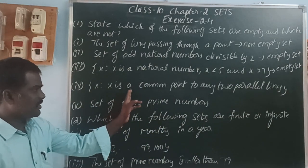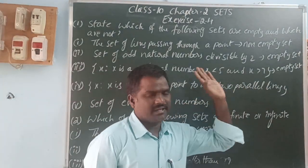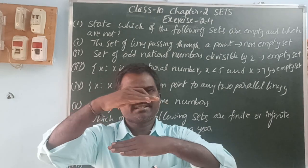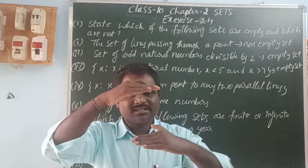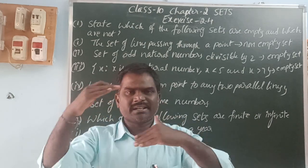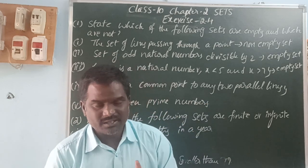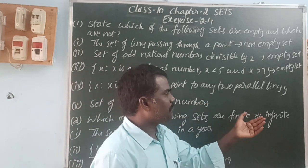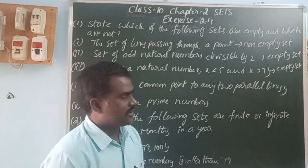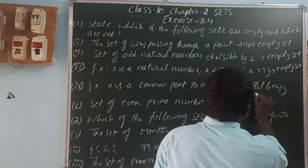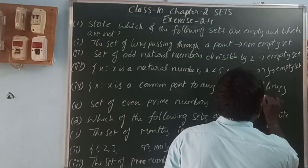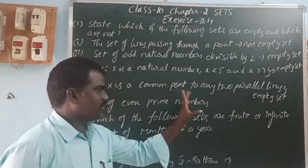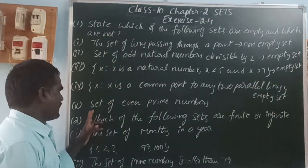Next: x is a common point to any two parallel lines. Parallel lines means the distance between the two lines is the same, so the lines do not intersect anywhere. That means there is no common point between two parallel lines. So here it is an empty set — there is no common point between the two parallel lines.